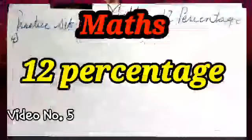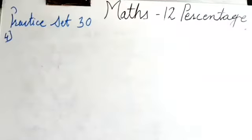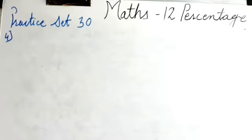Next, Example number 4. Soham received 40 messages on his birthday. Of these, 90% were birthday greetings. How many other messages did he get besides the greetings?